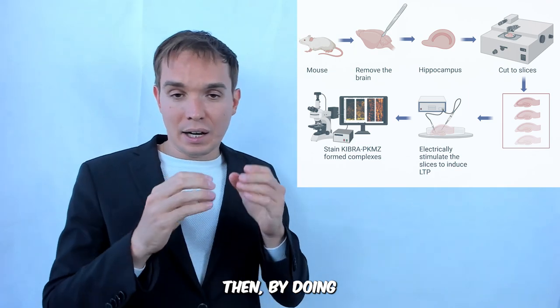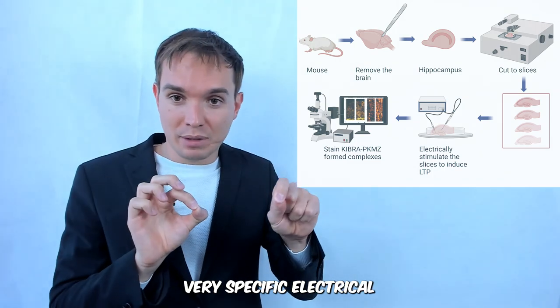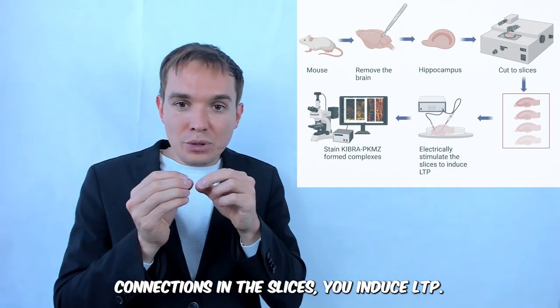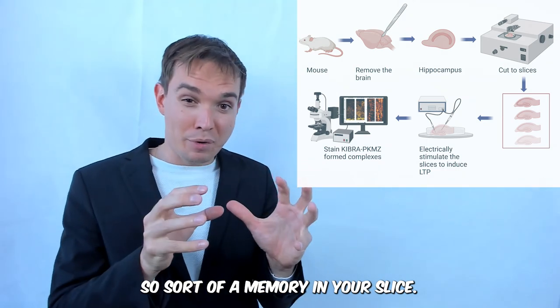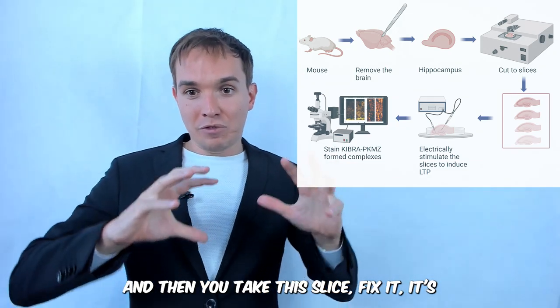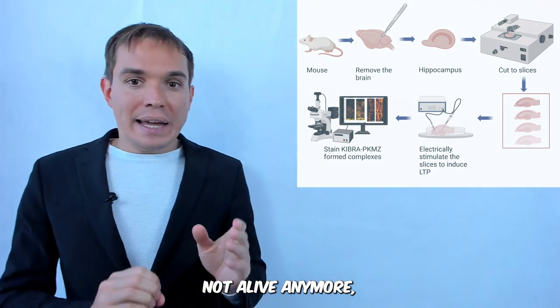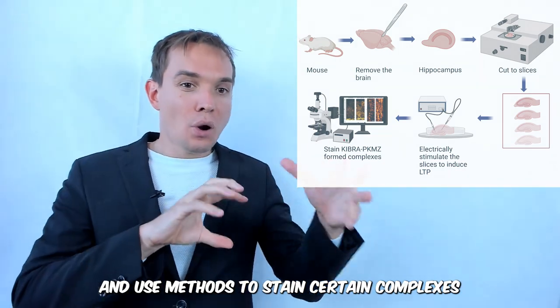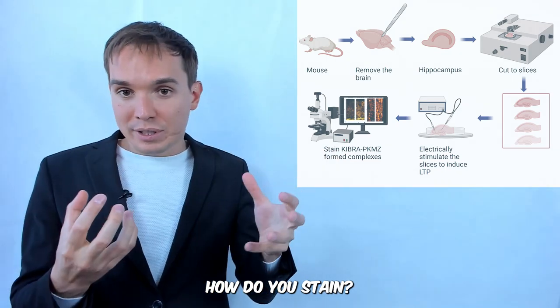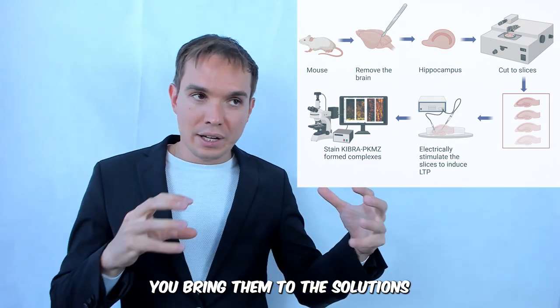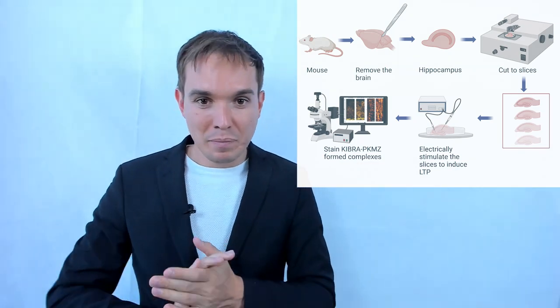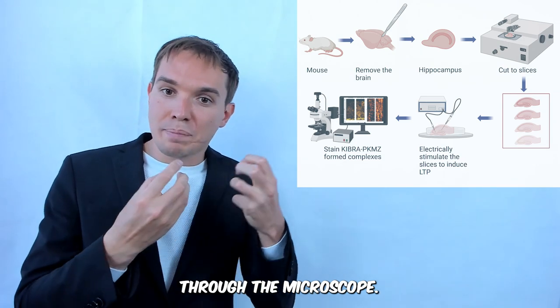Then the researchers put electrodes on the slice—so you have a slice of living tissue—to make an electrical stimulation to simulate what is going on in our brain. As I said, when we think we produce electrical signals. Similar things were done here but in controlled conditions on slices. Then by doing those very specific electrical stimulations on specific connections in the slices, you induce LTP. So sort of a memory in your slice. And then you take this slice, fix it so it's not live anymore, and use methods to stain certain complexes in that slice. In our case, it's KIBRA and PKMζ.